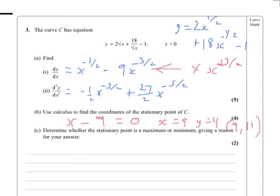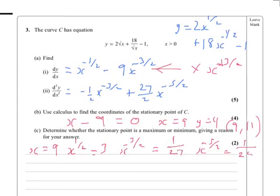So x equals 9 tells us that x to the half equals 3. x to the minus 3 over 2, then, equals 1 over 27, and x to the minus 5 over 2 equals 1 over 243.